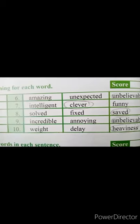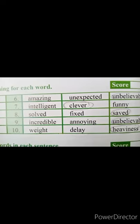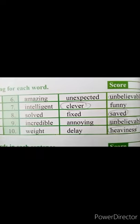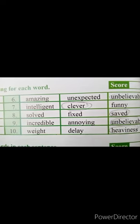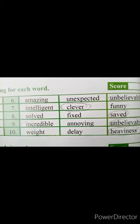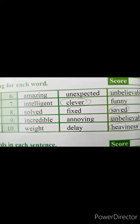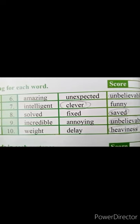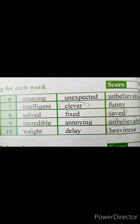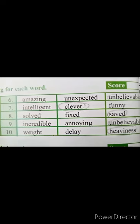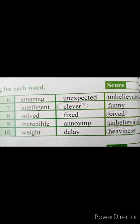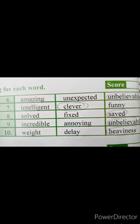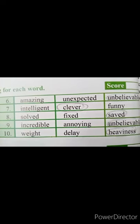Number seven is 'intelligent'. Intelligent ذہین کو کہتے ہیں. Options: clever and funny. Clever means ہوشیار یا ذہین، funny means مزاحیہ. Intelligent اور clever کا ایک ہی مطلب ہے — تو ہم clever کو circle کریں گے. Eighth one is 'solved'. Solve means حل کرنا. Options: fixed and saved. Solved اور saved کا ایک ہی مطلب ہے — تو ہم save کو circle کریں گے.